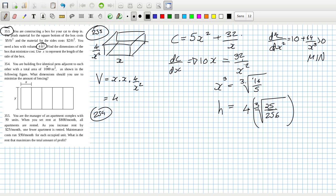You're building five identical pens. So they're all identical. The total area is a thousand, so each one must be 200 meters squared.